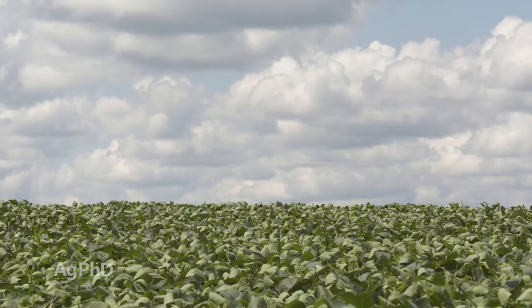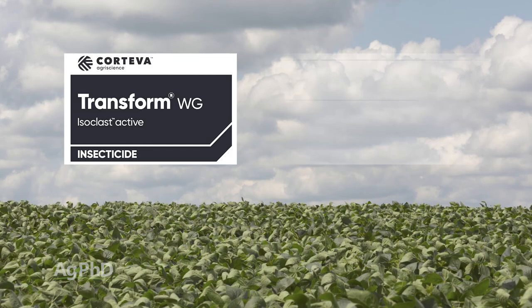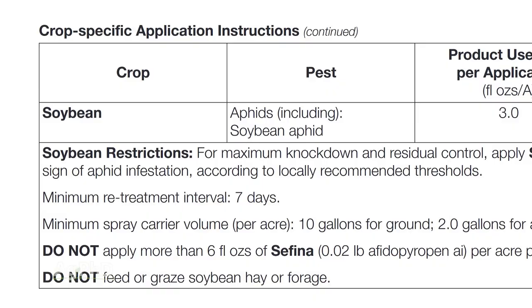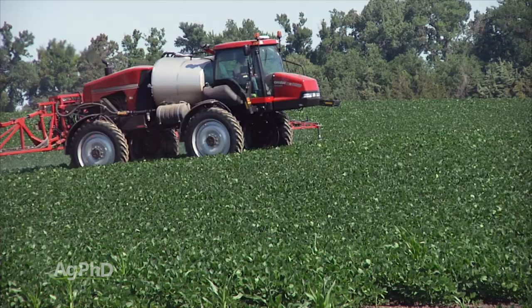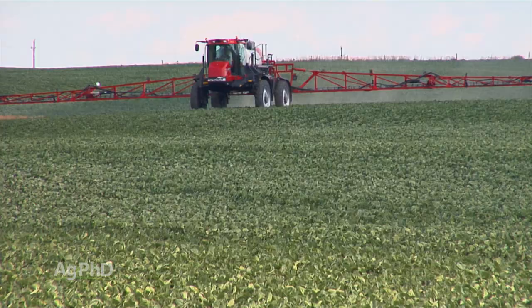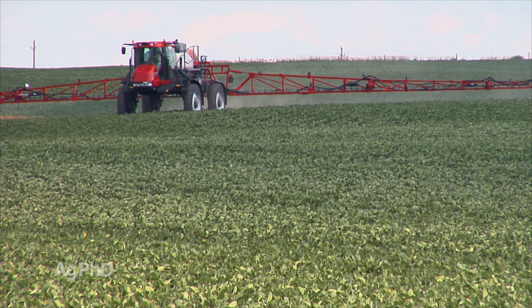The other products to be aware of are Transform and Sivanto. They're very specific to which insects they control, with aphids being one of the very few on their labels. Many farmers like to use those if they're concerned about leaving the beneficials alone in the field. They are very effective aphid control products, but they do cost a little bit more.